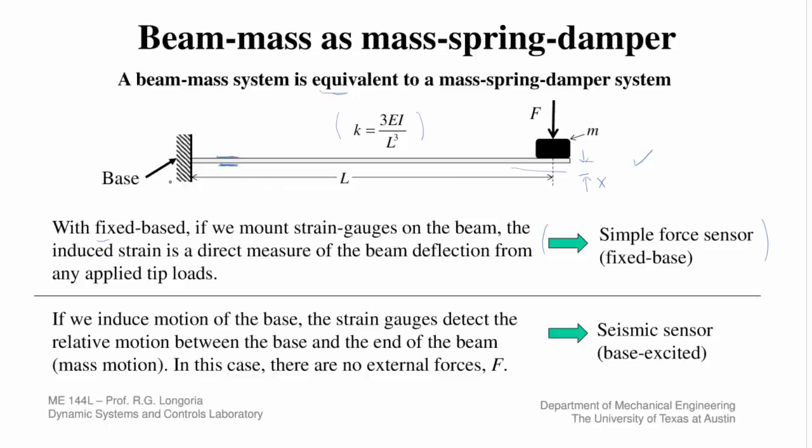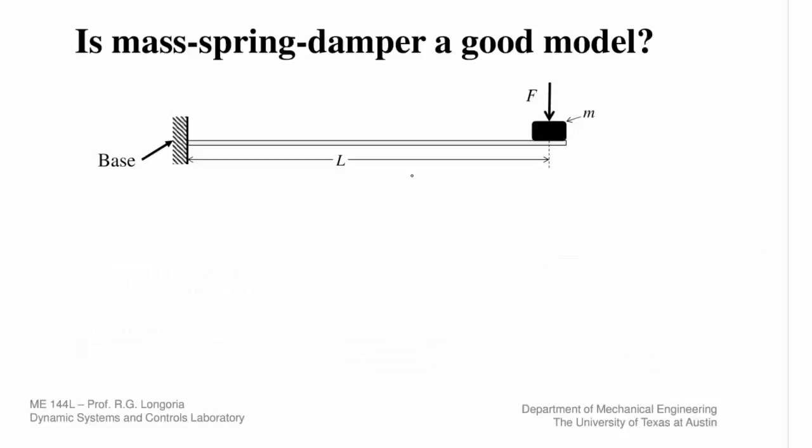Alternatively, let's say we move the base and don't excite the mass. Now it looks like the base-excited system, and so we can sort of play around with this setup as a seismic type sensor. If we induce motion of the base, the strain gauges then will detect the relative motion between the base and the mass, and this configuration will give us a response that's similar to what you would see in some seismic sensors.